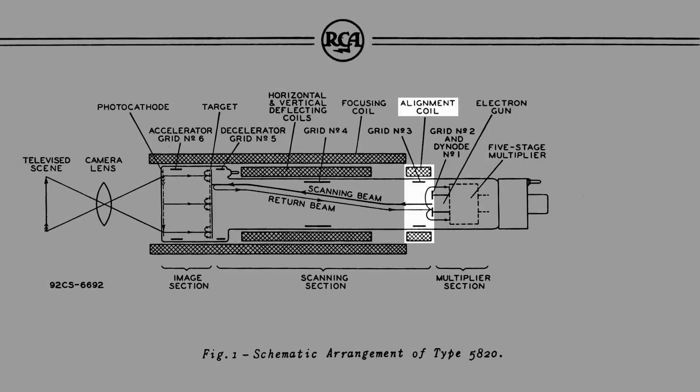Alignment of the beam from the gun is accomplished by a transverse magnetic field produced by an external coil located at the gun end of the focusing coil. Deflection of the beam is accomplished by transverse magnetic fields produced by external deflecting coils.